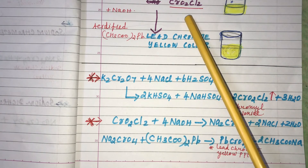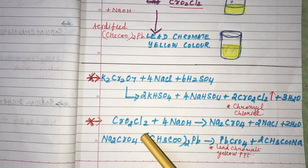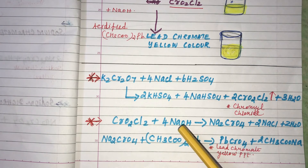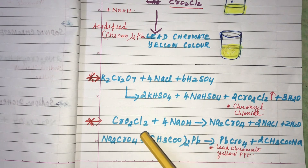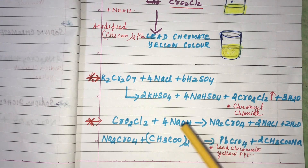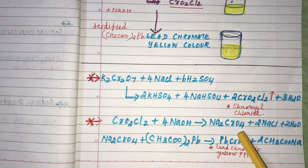The formed Chromyl Chloride is then added with Sodium Hydroxide. On adding Chromyl Chloride with Sodium Hydroxide, Sodium and Chromate combine to form Sodium Chromate (Na₂CrO₄), and the remaining Sodium with Chlorine forms Sodium Chloride plus 2H₂O. So Chromyl Chloride plus Sodium Hydroxide gives Na₂CrO₄, Sodium Chloride, and 2H₂O.